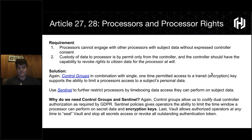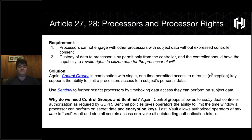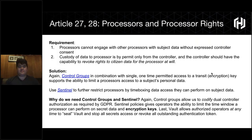There are two features of Vault that specifically target Articles 27 and 28. The first is Control Groups — as a data controller, there are specifically a set of Vault Enterprise features to implement how individuals, users, and applications have access to data and when they have access to data. The second is a series of features called Sentinel, which focuses on policy-as-code within Vault Enterprise, allowing you to stipulate other requirements around how users have access to data — for example, restricting that processors can only come in from certain IP ranges or CIDR blocks.